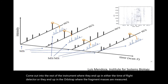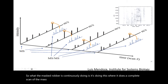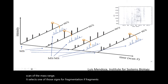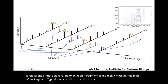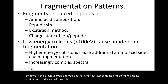The mass spectrometer continuously does a complete scan of the mass range, selects one of those ions for fragmentation, fragments it, and measures the masses of the fragments. Typically it does this for all ions in an MS1 scan, then does another MS1 scan, selects the most intense ion not previously selected, and keeps going until it gets to the end of the cycle.